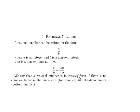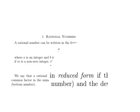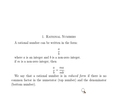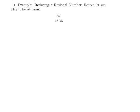We say that a rational number is in reduced form if there is no common factor in the numerator, that's what we call the top number, and the denominator, that's what we call the bottom number. So let's look at an example. We want to reduce to lowest terms this rational number.